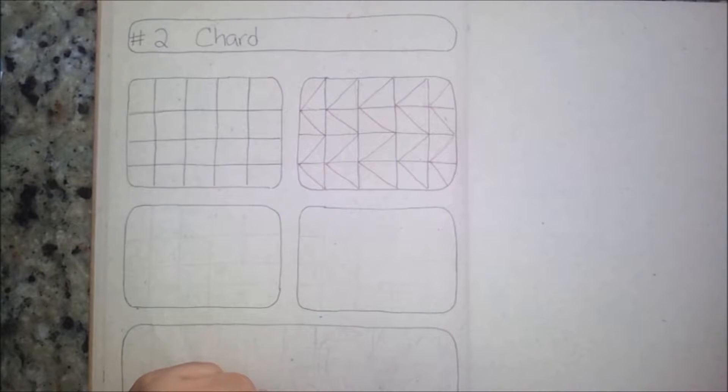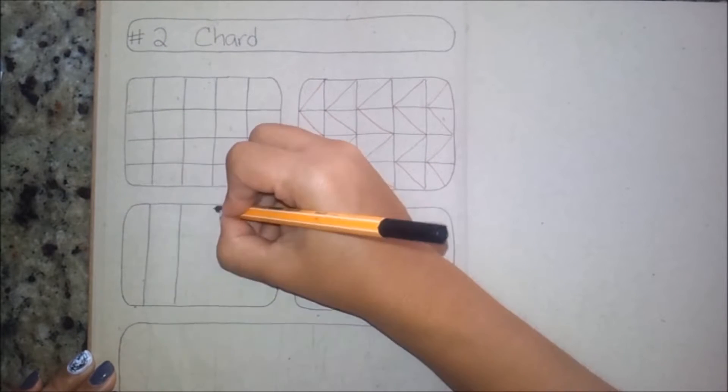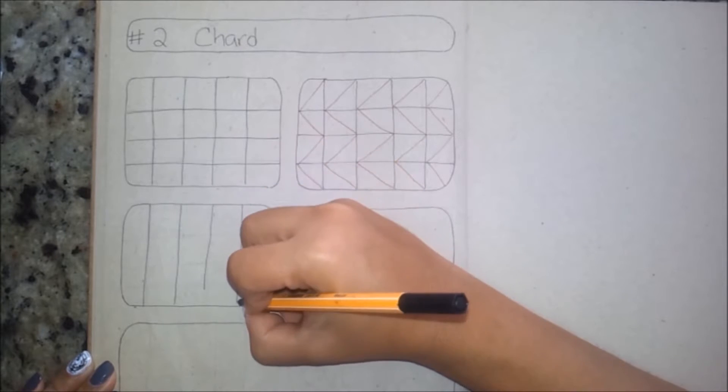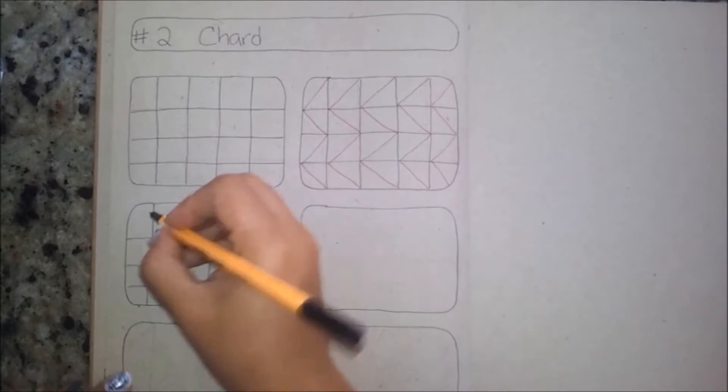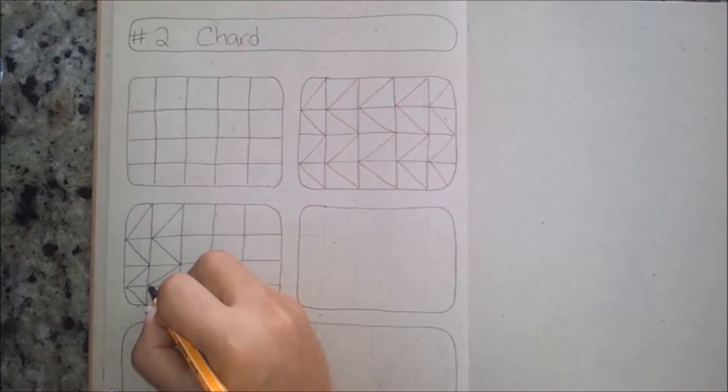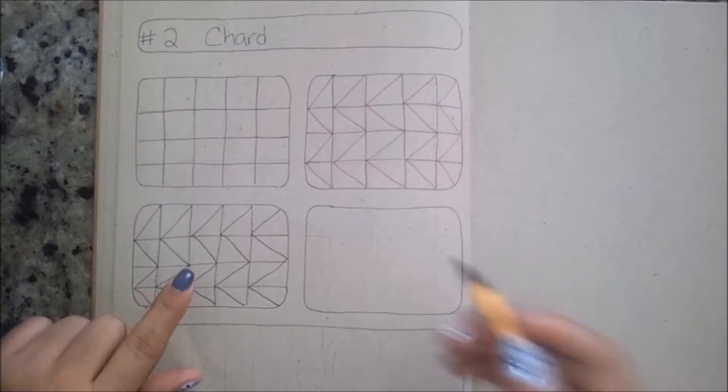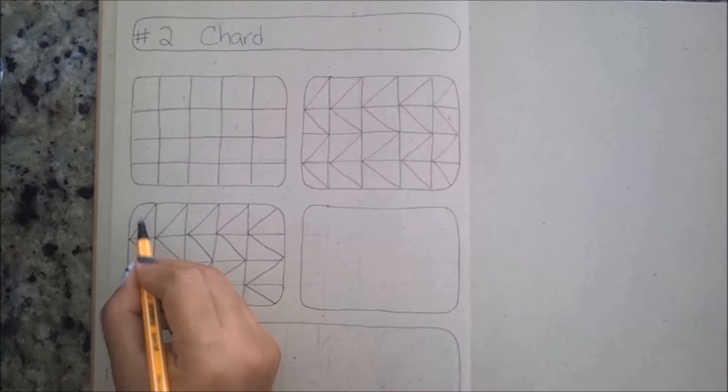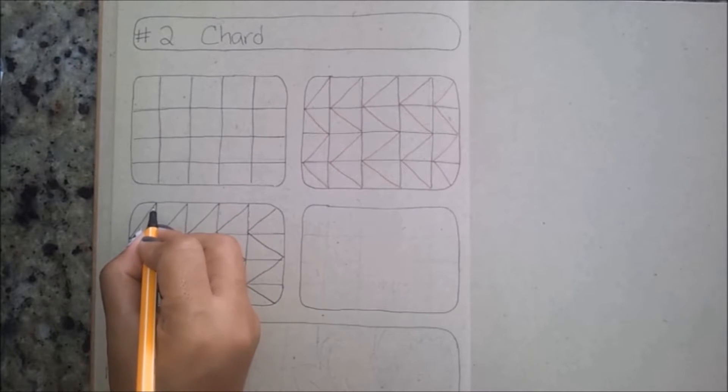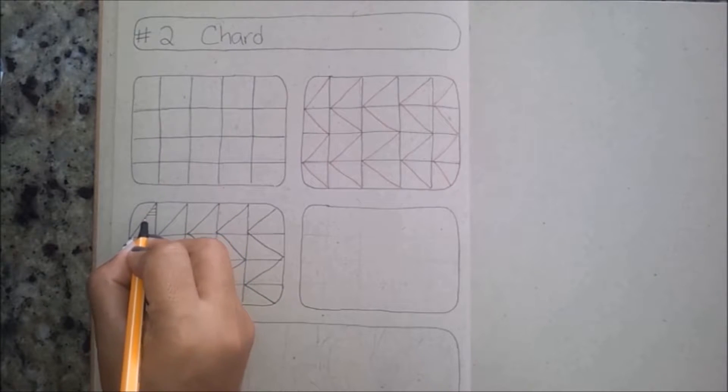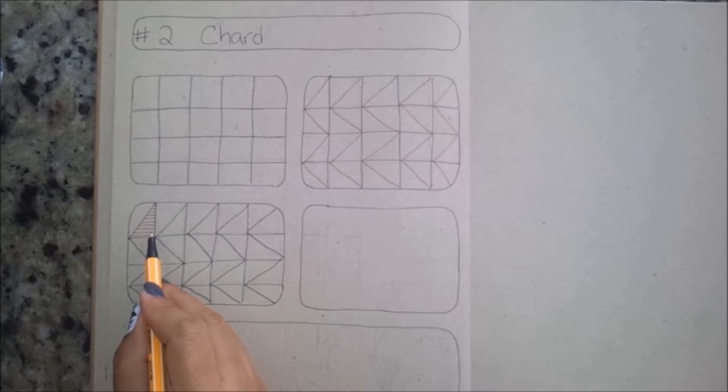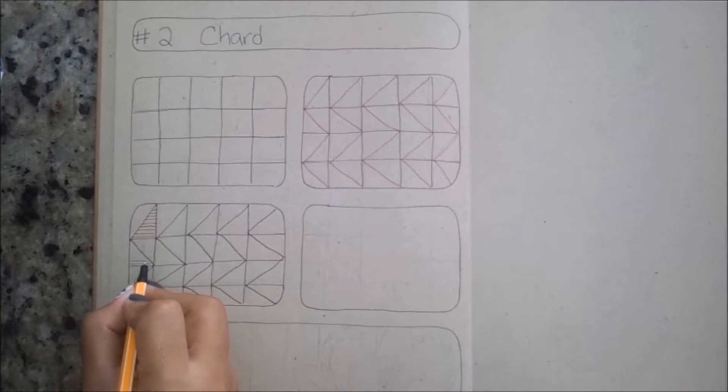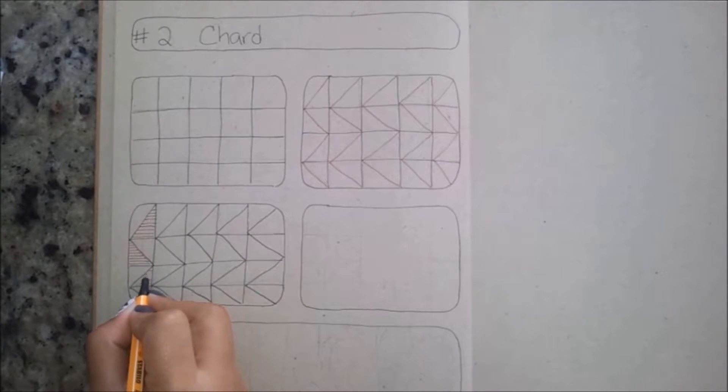Step number three, we're gonna repeat everything we just did, meaning the grid and the diagonal lines. You can see here that the squares are divided by two with these diagonal lines. You're gonna fill the lower part of the squares with horizontal lines, and we're gonna repeat that throughout the whole grid, just the lower parts like I'm doing here.